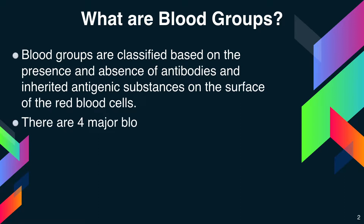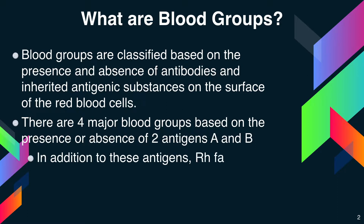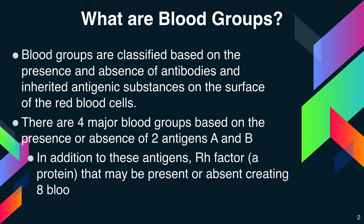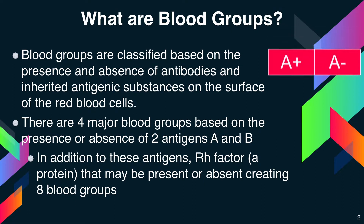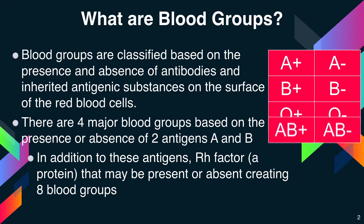There are four major blood groups based on the presence or absence of two antigens, A and B. In addition to A and B, there is another factor — the Rh factor — that may be present or absent, creating eight blood groups: A positive, A negative, B positive, B negative, O positive, O negative, AB positive, and AB negative.